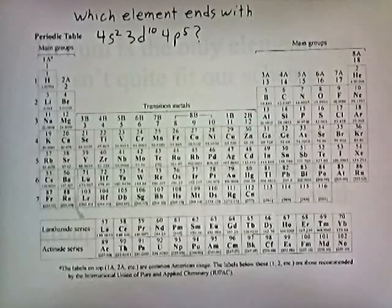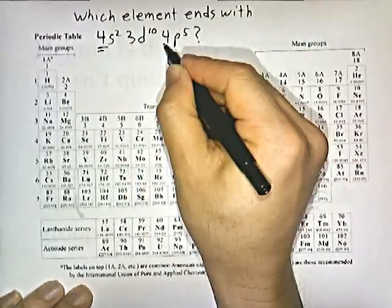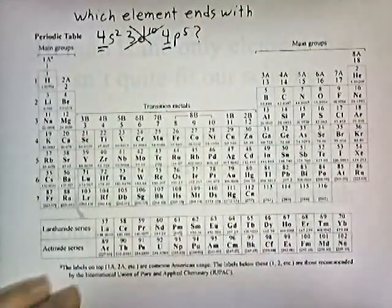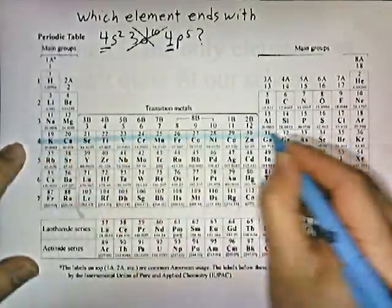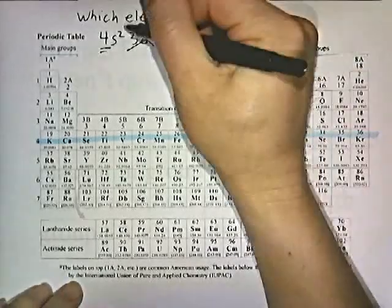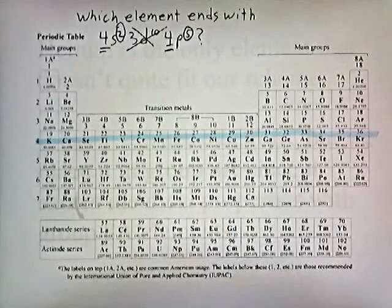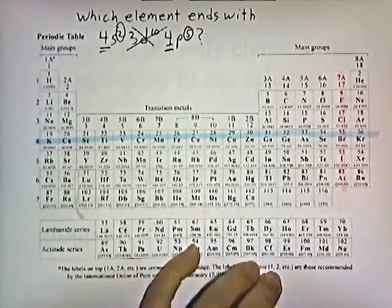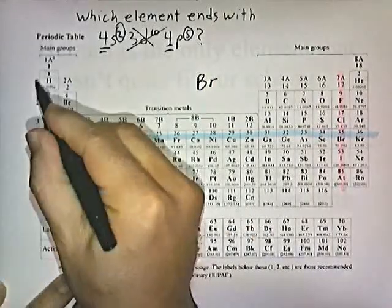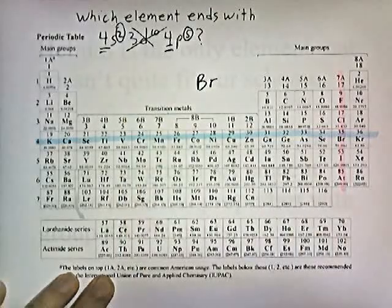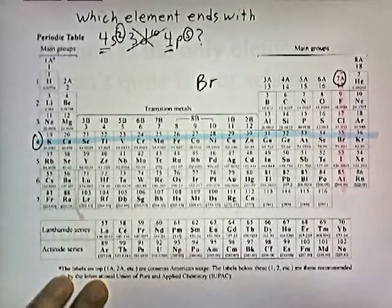Which element ends with 4s2, 3d10, 4p5? The highest energy level with electrons is the fourth energy level, so we ignore the d term. It's in period 4, and the number of valence electrons is 2 plus 5 equals 7, so it's in group 7A. Counting to the 7th column in period 4 gives us bromine — it's in the 4th period, 7th column.